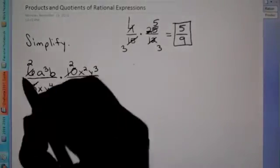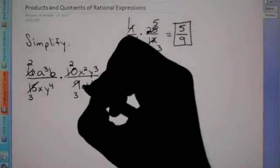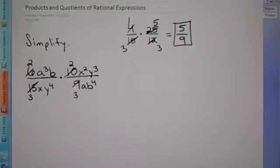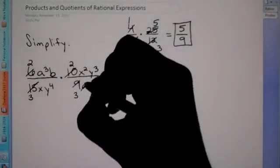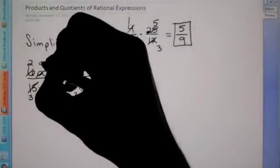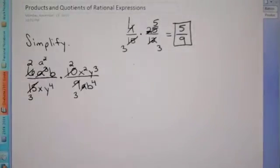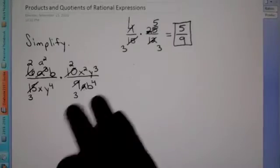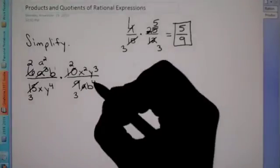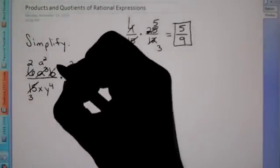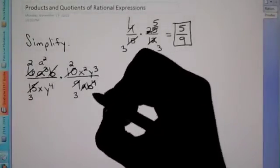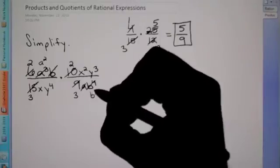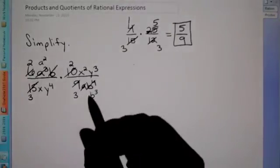9 divided by 3 is 3. Now let's do our variables. We have a to the 3rd on top and a to the 1st on bottom, so I can get rid of this a and take this one down by an exponent — that becomes a squared. We had 3 powers of a on top, 1 power on bottom, so we got rid of 1 on top and bottom. Now we do our B: we have B to the 1st and B to the 4th, so I can get rid of this B and lower this one to be B to the 3rd.